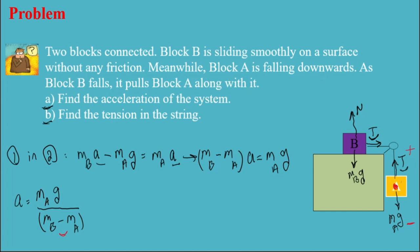I'm gonna substitute the acceleration into equation one. In equation one, tension equals m_B times a. So it's m_B times my acceleration, which is m_A g over m_B minus m_A. And that's the answer for part B.